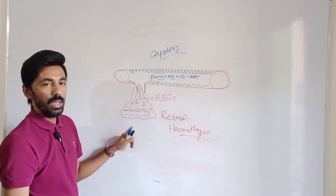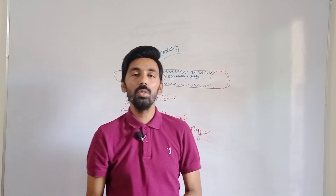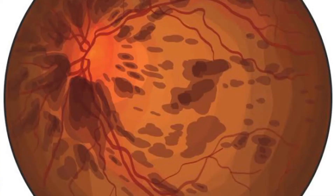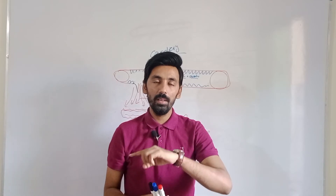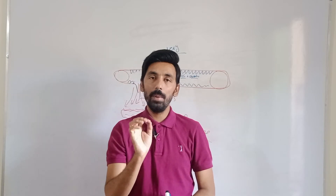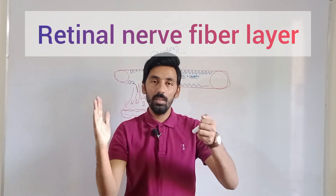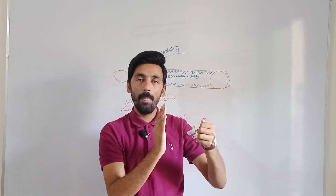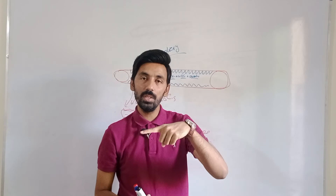There are three different types of retinal hemorrhages. The first is flame-shaped hemorrhages — the shape of the hemorrhage in the retina resembles a flame. Flame-shaped hemorrhages always occur at the superficial layers of the retina, specifically at the retinal nerve fiber layer, which is the most superficial layer when going from anterior to posterior.